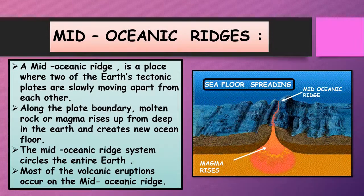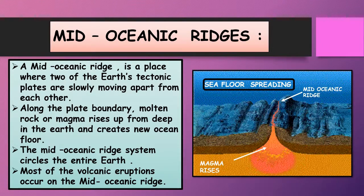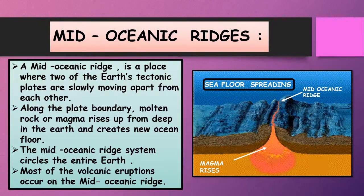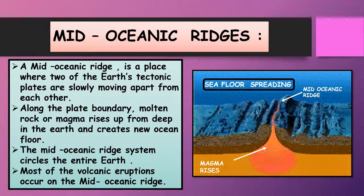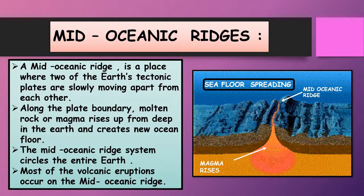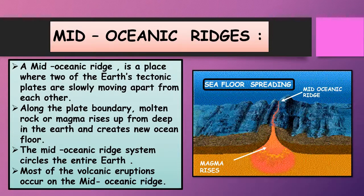Now let us understand what mid-oceanic ridges are. The largest mountain range on earth is called the mid-oceanic ridge, spanning around 40,389 miles around the globe — truly a global landmark. A mid-oceanic ridge is a place where two of the earth's tectonic plates are slowly moving apart from each other. Magma rises up from deep in the earth and creates a new ocean floor. The mid-oceanic ridge system circles the entire earth, and most of the volcanic eruptions occur on mid-oceanic ridges.